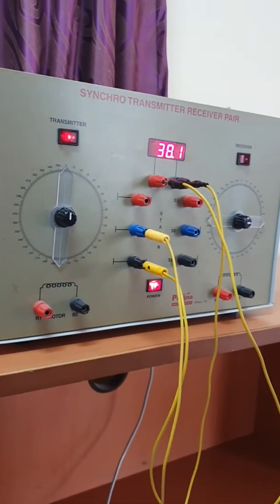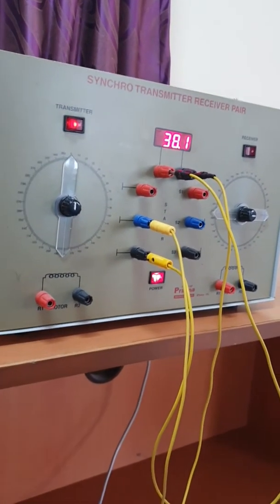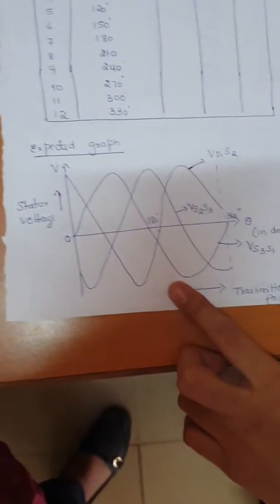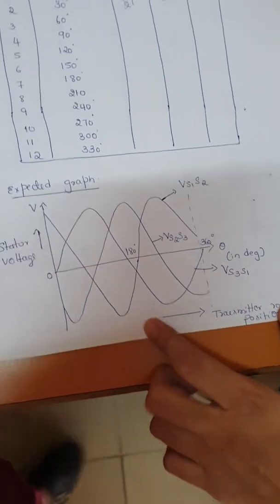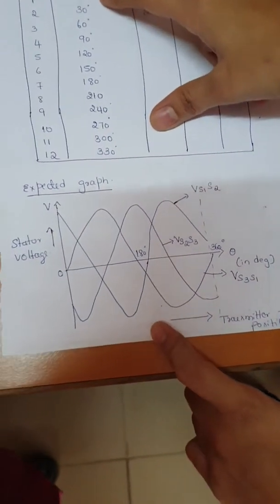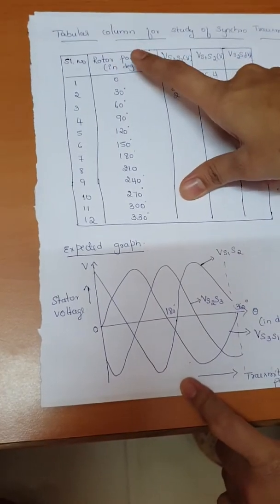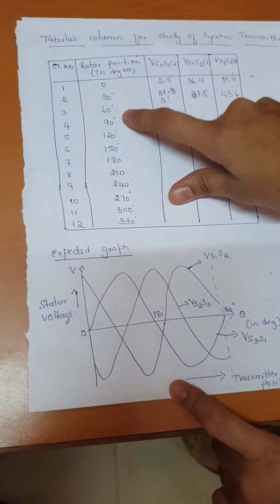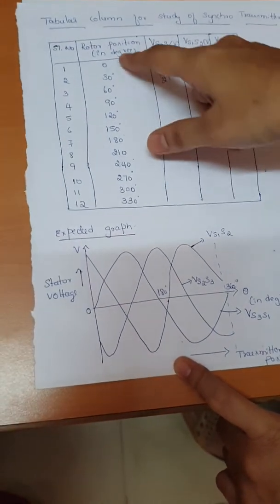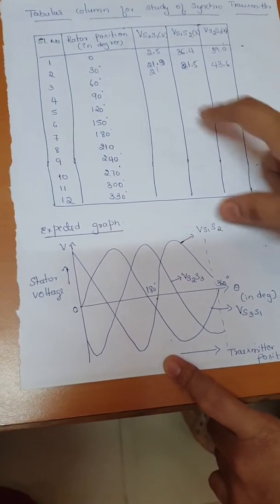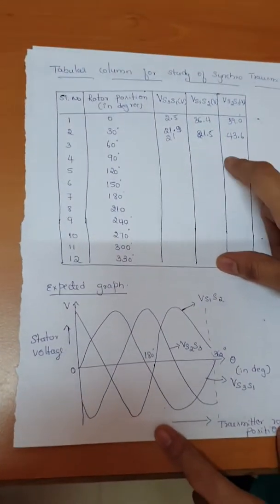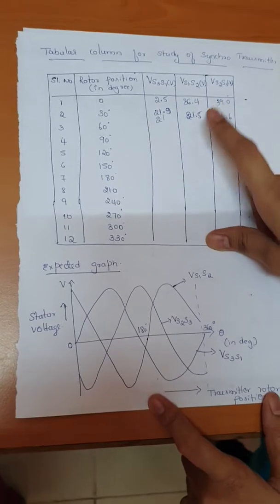This is the synchro transmitter and receiver. After plotting, we are going to obtain this graph. This is the expected graph for the synchro transmitter. If you observe the tabular column, the rotor input will be in the form of angular position. We are going to give the input as angles, and this angular position will be converted into an electrical signal. Here we are converting the electrical signal as the voltage signal. This is what the synchro transmitter does.